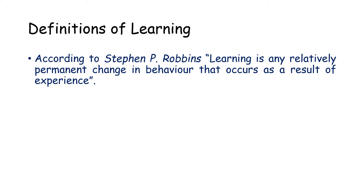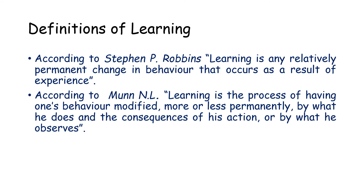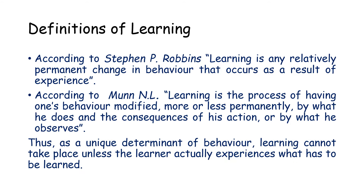Let us understand the various definitions of learning given by various authors. According to Stephen P. Robbins, learning is any relatively permanent change in behavior that occurs as a result of experience. According to Moon NL, learning is a process of having one's behavior modified more or less permanently by what he does and the consequences of his actions or by what he observes. From these two definitions, it is clear that learning cannot take place unless the learner actually experiences what has to be learned.